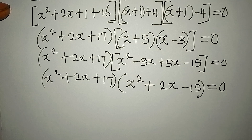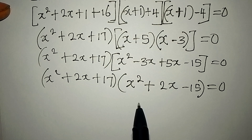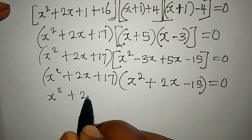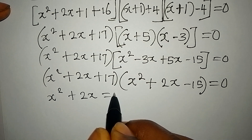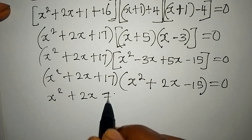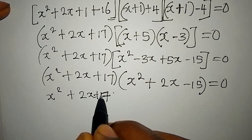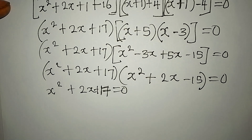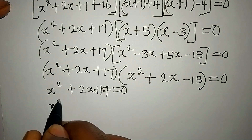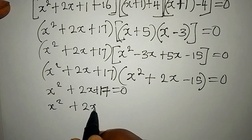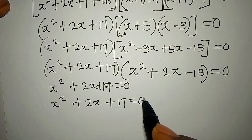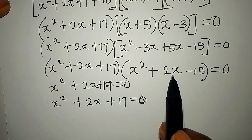We now have two terms multiplied together equal to zero, so we apply the zero product rule. Either x² + 2x + 17 = 0, or the second factor equals zero.